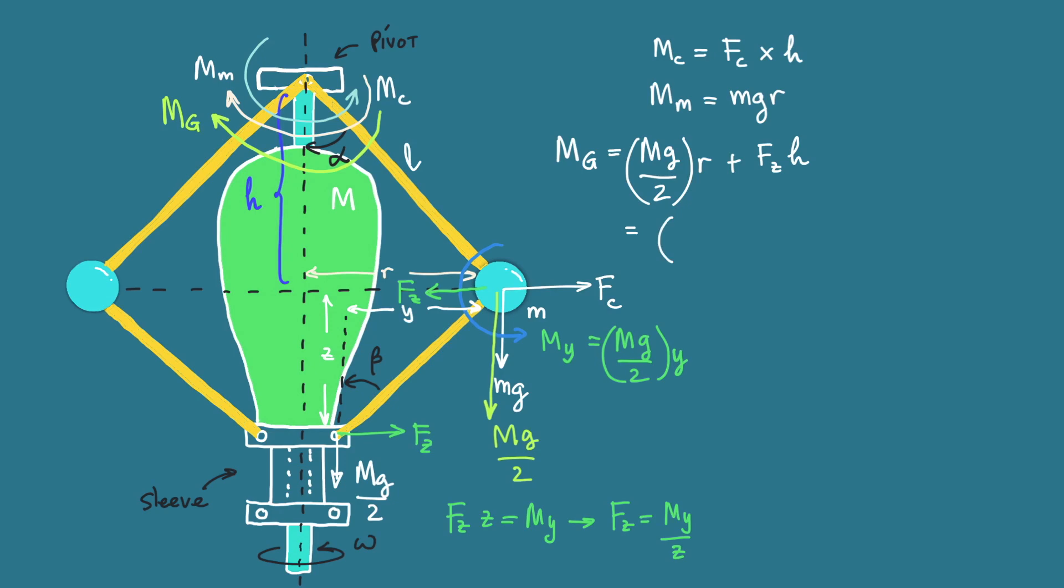So we have the total MG which is Mg over 2 multiplied by R plus Mg over 2 multiplied by Y divided by Z multiplied by H. The resultant of all the moments at the pivot must be zero. If we agree that the counterclockwise direction is positive, then MC minus MM minus MG equals zero. Therefore MC equals MM plus MG.